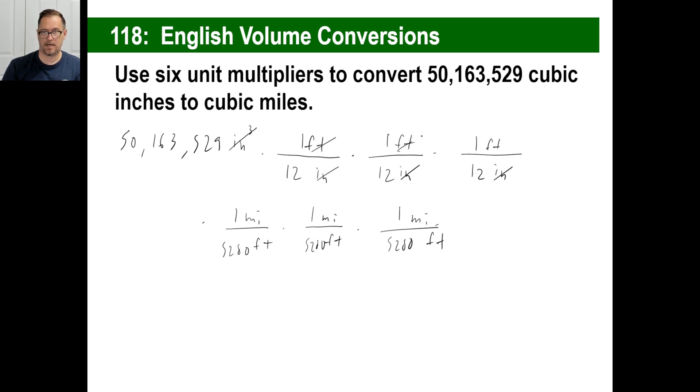I want you to go ahead and do all the arithmetic. That's crazy. 50,000 blah blah blah times one, one, one, one. I'm just going to write 50 million. That's on the top. On the bottom, 12, 12, 12. That means 12 to the third power. And then I'm going to write 5,280 to the third power. And then I have mile times mile times mile. That is mile to the third power. What that is, who the heck knows. I don't care. We're just doing an exercise.